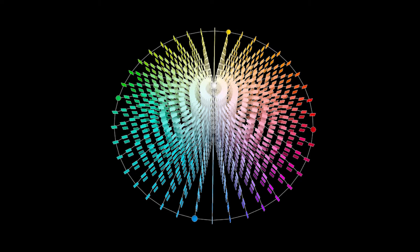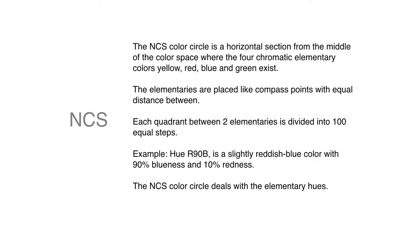Here is an illustration of the color solid. So in NCS, the hue circle is exactly at the equator of the color space. As mentioned, the elementary chromatic colors are compass points in that flat circle, then with white at the top and black at the bottom.